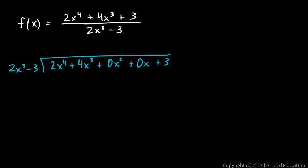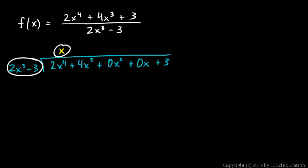To get started, we only look at the lead terms — the 2x cubed and the 2x to the fourth — and we ask ourselves: how many times does 2x cubed go into 2x to the fourth? Or in other words, what do I multiply 2x cubed by to get 2x to the fourth? The answer is x. So my next step is to take this x, multiply it by the divisor, write the result down here, and then subtract. x times the divisor gives us 2x to the fourth minus 3x, and I'll put that so the x terms are lined up vertically.